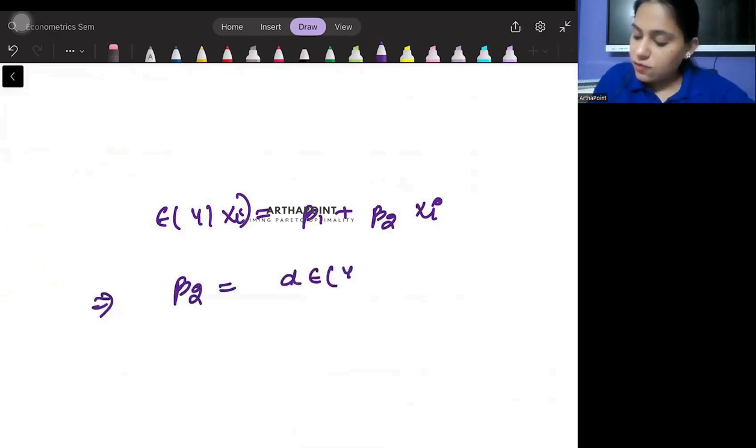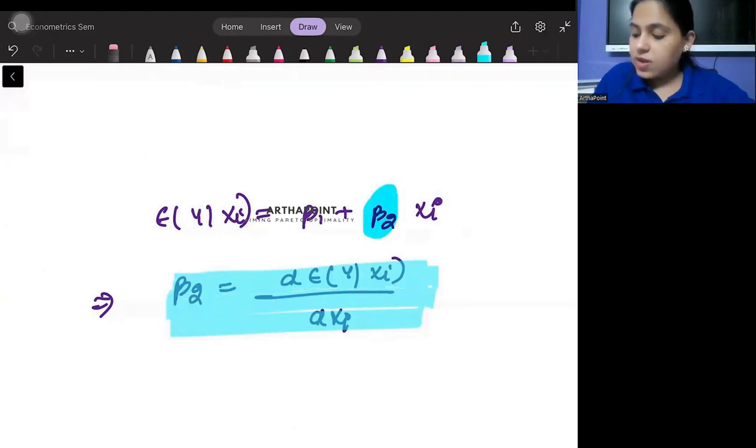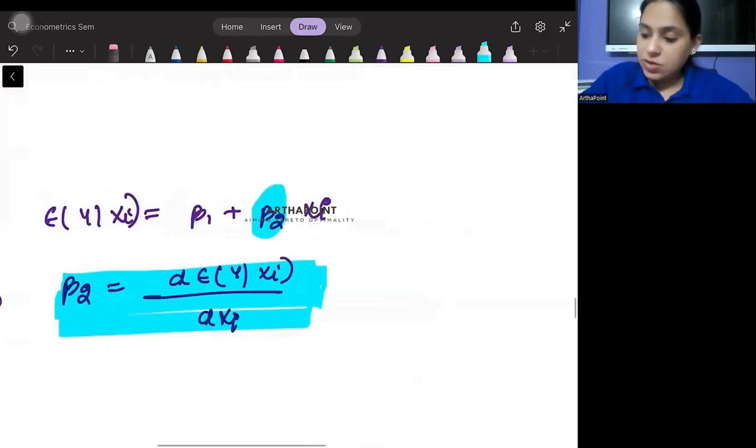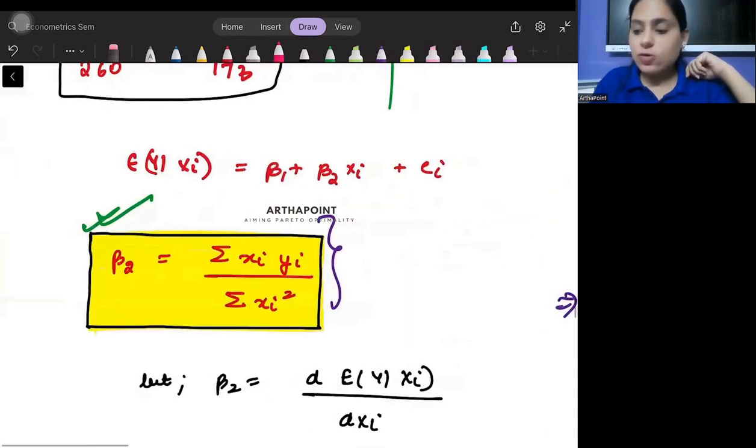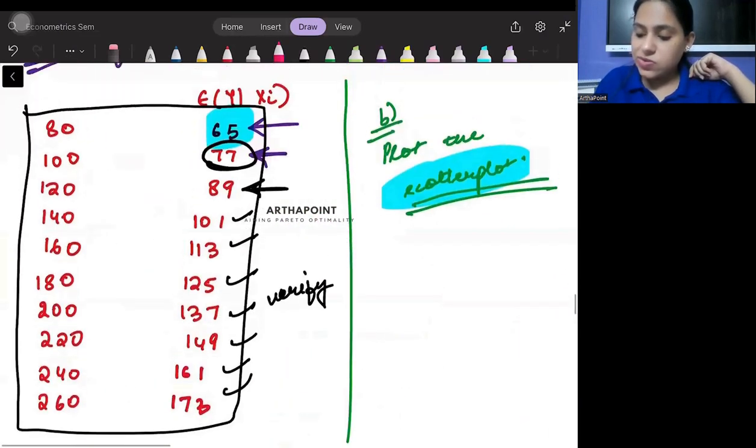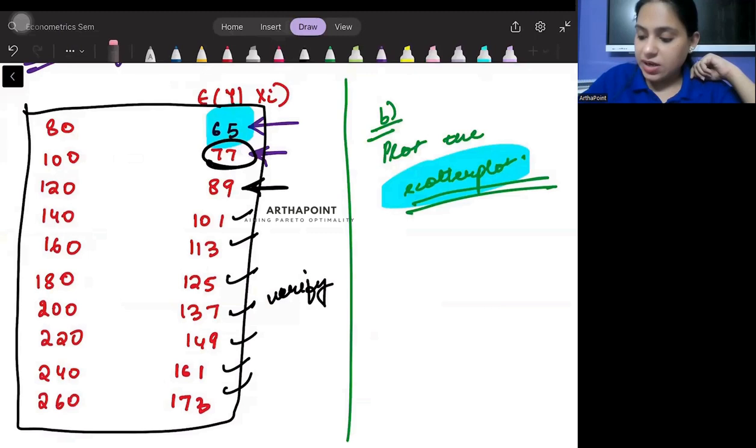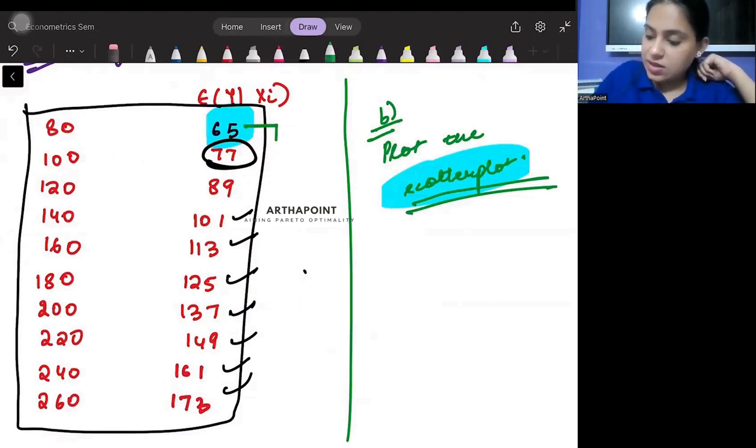I know that this beta 2 can be written as the slope. It tells me how the average value of y, the conditional mean of y, changes as x changes. If we go back to this table that I made, you will notice that this gap is of 12 units and this gap is of 20 units.